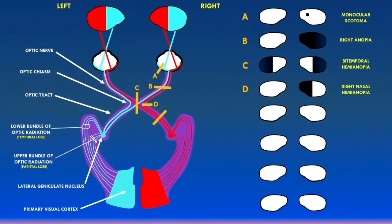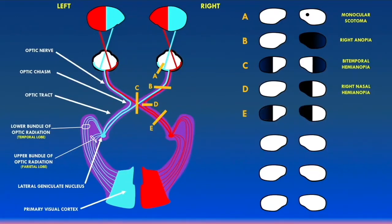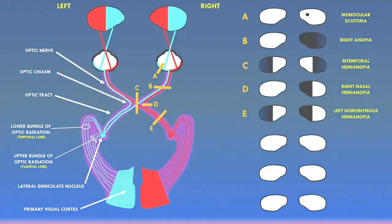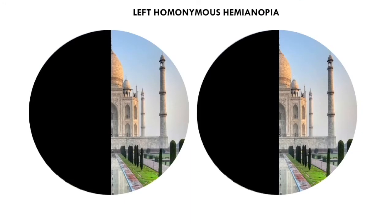Lesion E is a lesion of the right optic tract. The fibers coming from the nasal hemiretina of the left eye and the temporal hemiretina of the right eye are being damaged. So no visual signals from those regions can reach the brain, resulting in a loss of the left visual fields in both eyes. This is known as a left homonymous hemianopia.